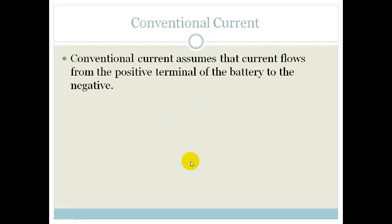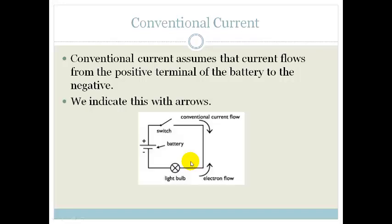Conventional current assumes that the current flows from the positive terminal of the battery to the negative. We indicate this with arrows. So sometimes they'll ask you to draw a circuit and ask you to indicate the conventional current.